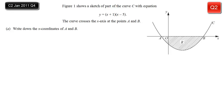In this integration question we're given a sketch of curve C with a quadratic equation already factorized, and we're told it crosses the x-axis at points A and B. Part A asks us to write down the x-coordinates of A and B — 'write down' is a clue it should be easy. The factors tell us: x plus 1 means it crosses at minus 1, which must be point A, and x minus 5 means it crosses at positive 5, which must be B.